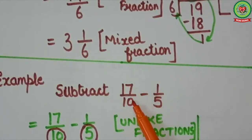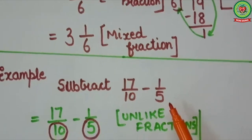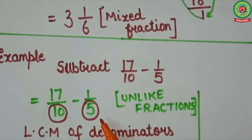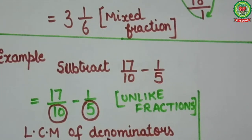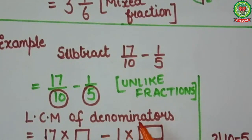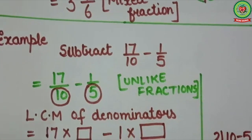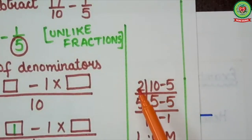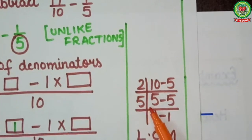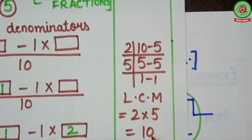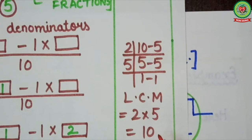Now subtract 17 upon 10 and 1 upon 5. Step 1: check denominators. Denominators are 10 and 5 which are not same. Therefore these are unlike fractions. Step 2: LCM of denominators using the antenna method. For 10 and 5, first it will go on table of 2, then on table of 5. After multiplying, LCM will come 10.